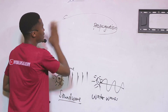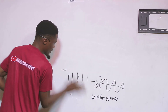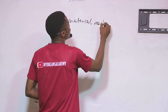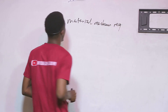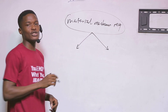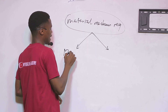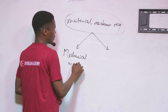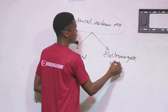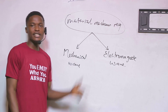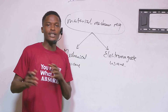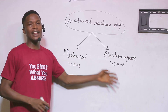The second classification is based on material medium requirement. Under this classification, we also have two types of waves: mechanical waves and electromagnetic waves. In the first classification, we had longitudinal and transverse; in this classification, we have mechanical and electromagnetic.